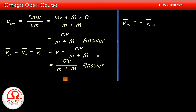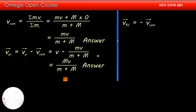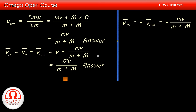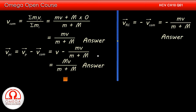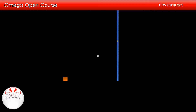Since the rod was initially at rest, its velocity with respect to the centre of mass is equal in magnitude to the speed of the centre of mass but in the opposite direction. Thus the velocity of the rod with respect to the centre of mass is mv/(m + M). This is the answer to part C.